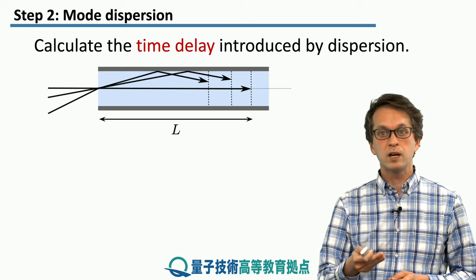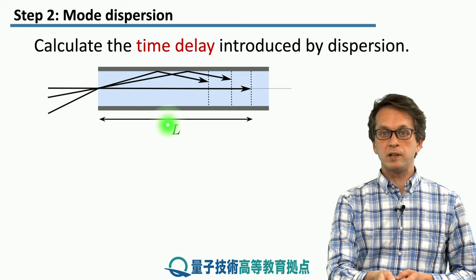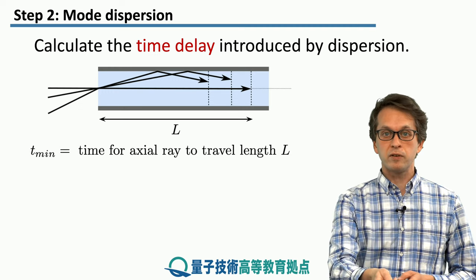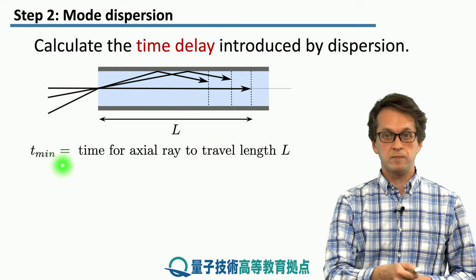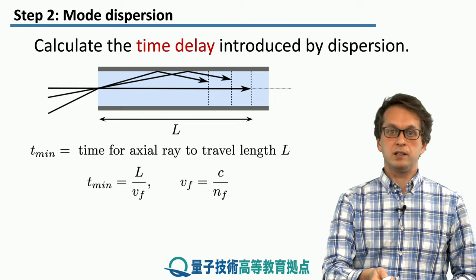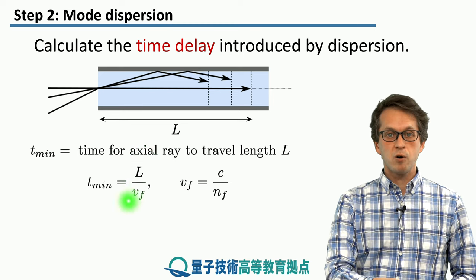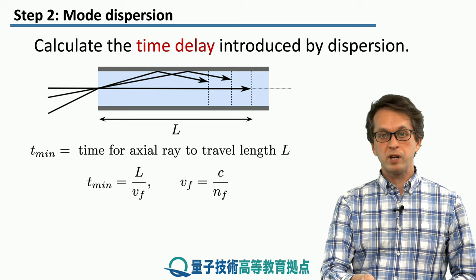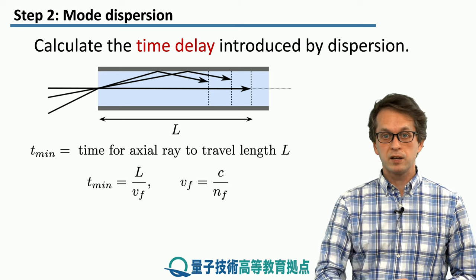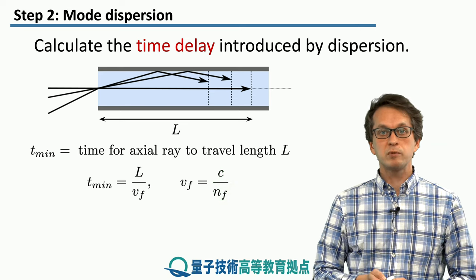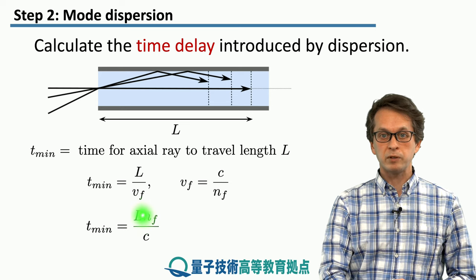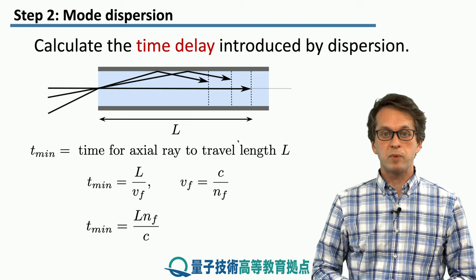Let's start calculating the time delay between the fastest and slowest modes. We consider some length capital L that the fastest axial mode traverses, and the time it takes for this mode to traverse this distance we call T-min. T-min is the distance traversed over the speed of light in the fiber. Since Vf equals C over Nf, T-min equals L times the refractive index of the fiber, all divided by the speed of light in vacuum C.